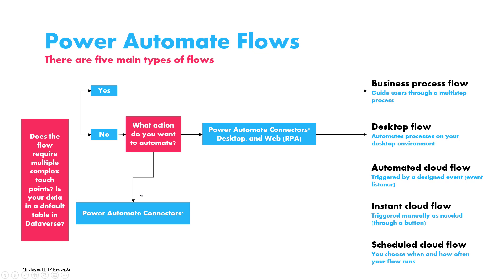If you can't find the related connector, then you do need to go down the desktop route. Common examples include automating the movement of a folder on your computer, or automating actions in proprietary software your company uses that doesn't have a Power Automate connector. For example, if your company has their own accounting software not on the market with no connector, you can still automate it using a Desktop Flow — that's when you need to select Desktop Flow and use desktop or web RPA.